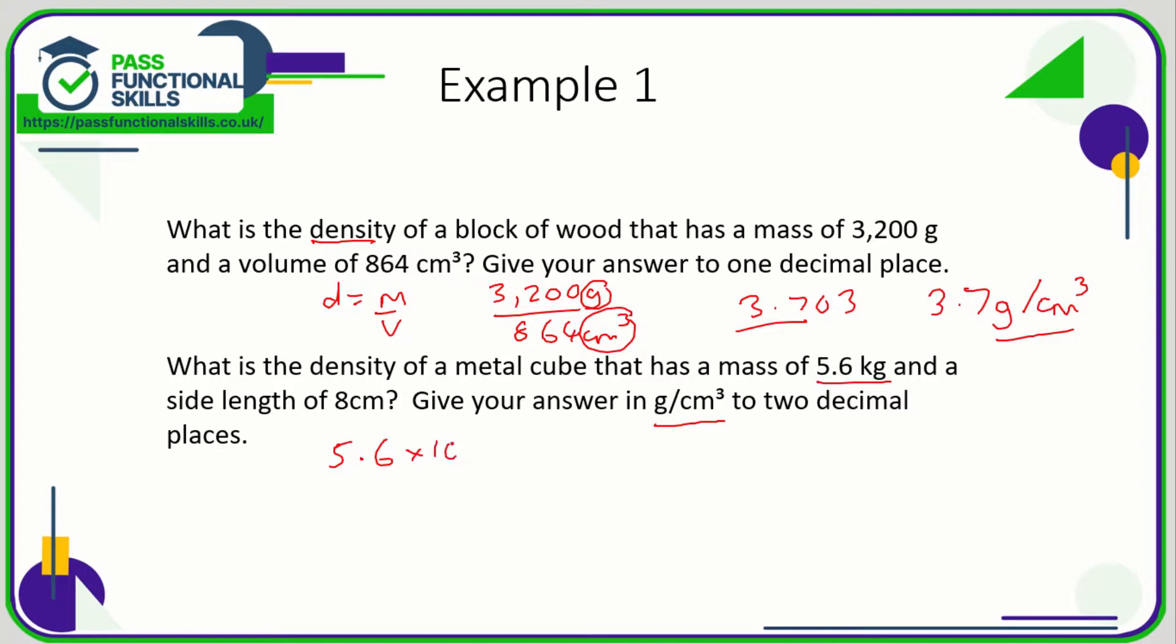Density is the mass over the volume, so 5600 grams divided by... we've got another problem here, we don't know the volume. But it's a cube with a side length of eight, so the volume of a cube is simply, well all the dimensions of a cube are the same, so it's going to be eight times eight times eight. Let's work out that first of all: eight times eight times eight is 512, so the volume is 512 cubic centimeters.